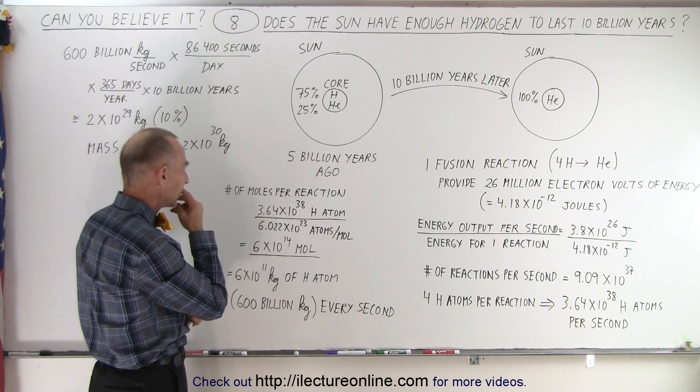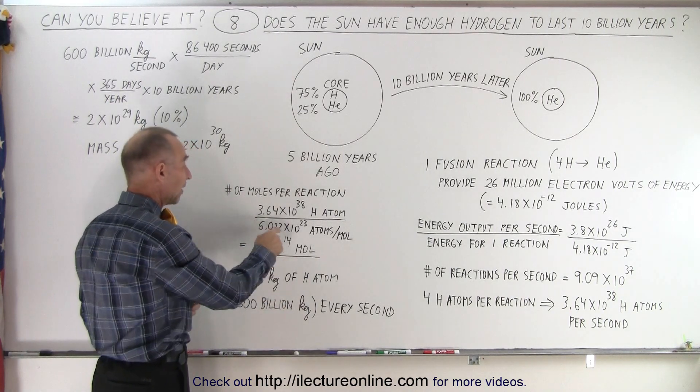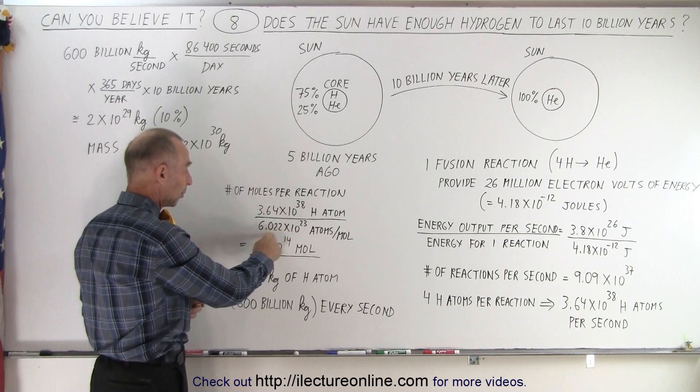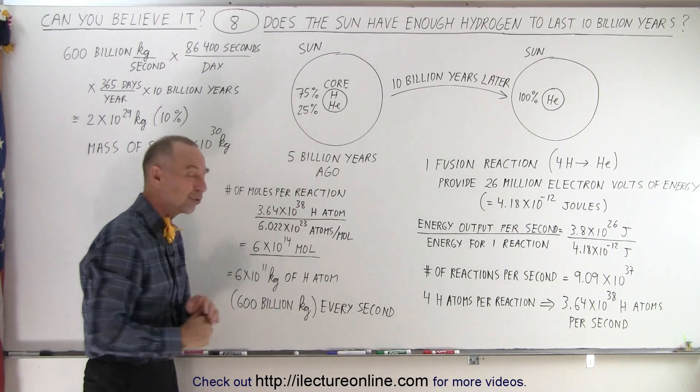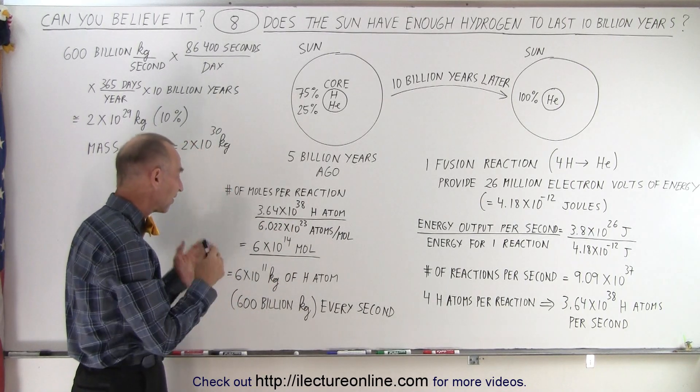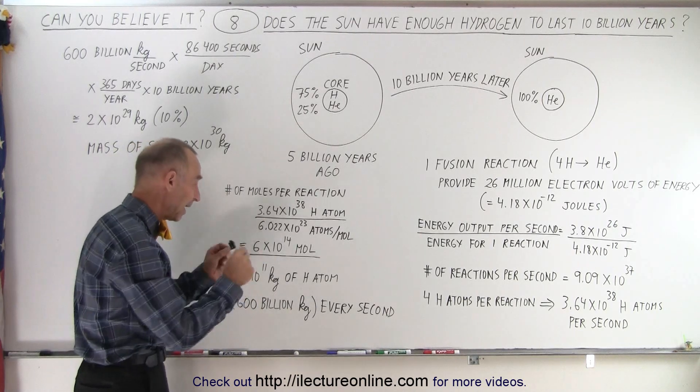Well, let's see here. The number of moles per reaction, we're going to convert atoms to moles, and we divide by Avogadro's number, which is 6.02 times 10 to the 23rd, and we end up with 6 times 10 to the 14 moles. That's 600 trillion moles of hydrogen converted into helium every single second.